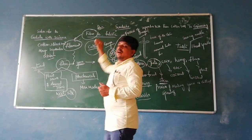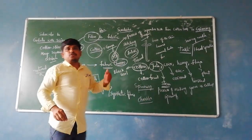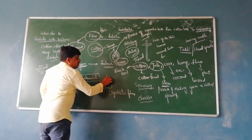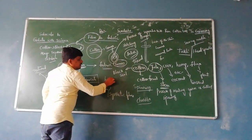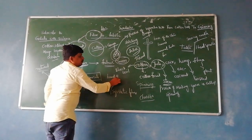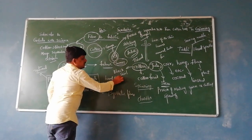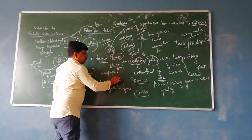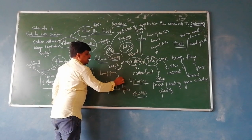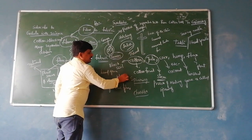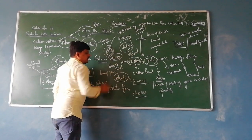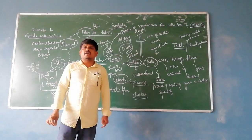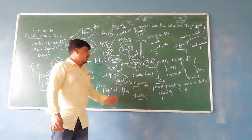In India, people use fabric which is made by hand — hand-spun cloth. Mahatma Gandhi encouraged Indians to use Khadi and stop the usage of foreign goods during the independence movement.